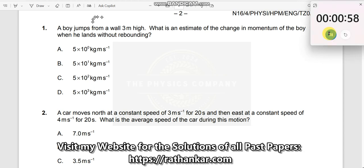Question number 1. A boy jumps from a wall of 3 meters height. 3 meters height is given. So this is the wall. So this is 3 meters. What is the estimate of the change in momentum of the boy when he lands without rebounding?